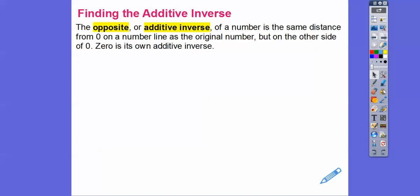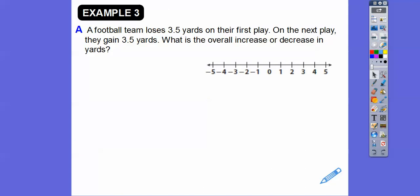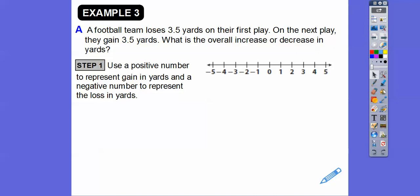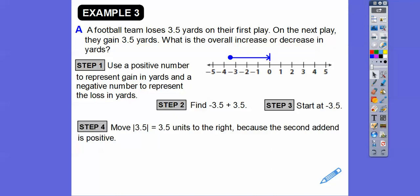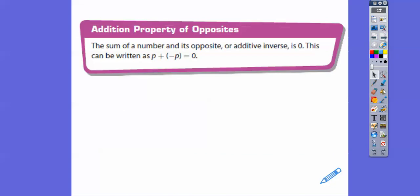Finding the additive inverse. The opposite or additive inverse of a number is the same distance from 0 on a number line as the original number, but on the other side of 0. So 0 is its own additive inverse. Like negative 3 and positive 3, 5 and negative 5, negative 11 and positive 11 — those are all additive inverses. A football team loses 3.5 yards on their first play — that's negative 3.5. On the next play they gain 3.5 yards. Start at negative 3.5 and go 3.5 units to the right — that takes me back to 0. The overall change is 0 yards.